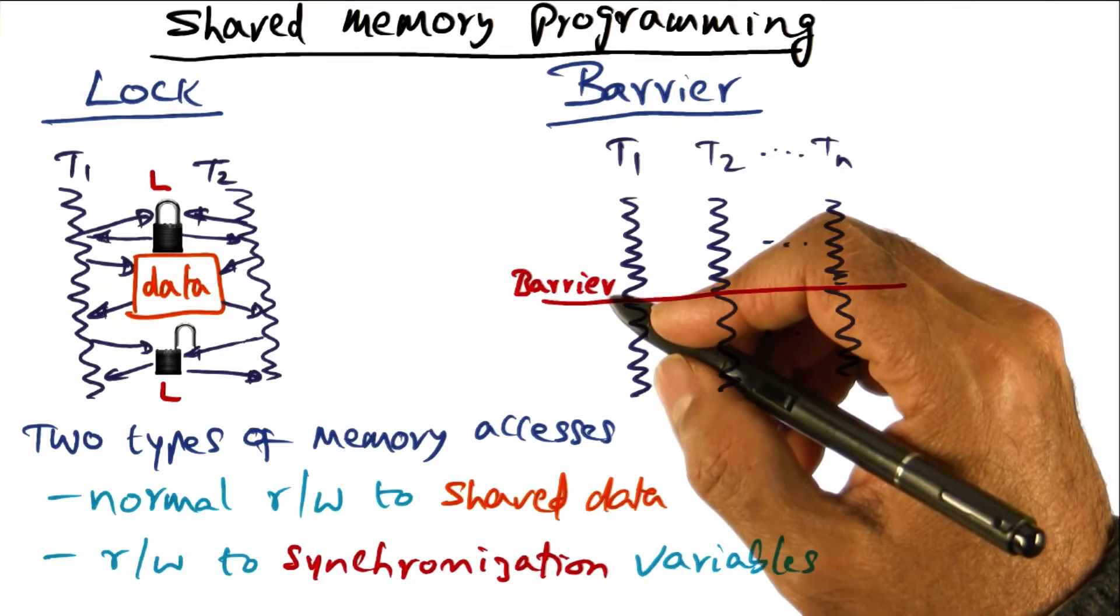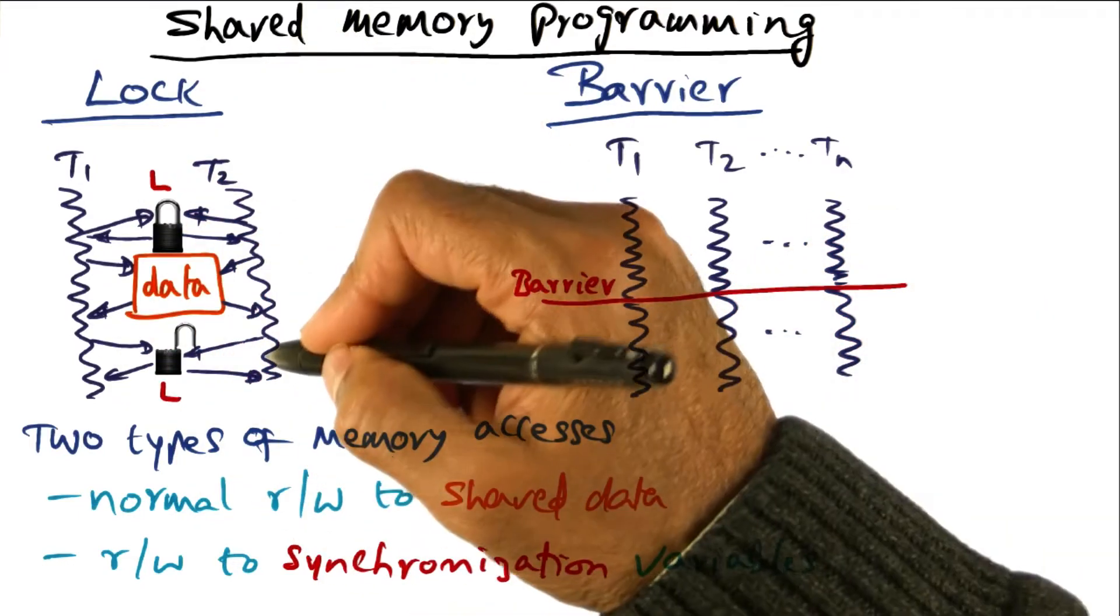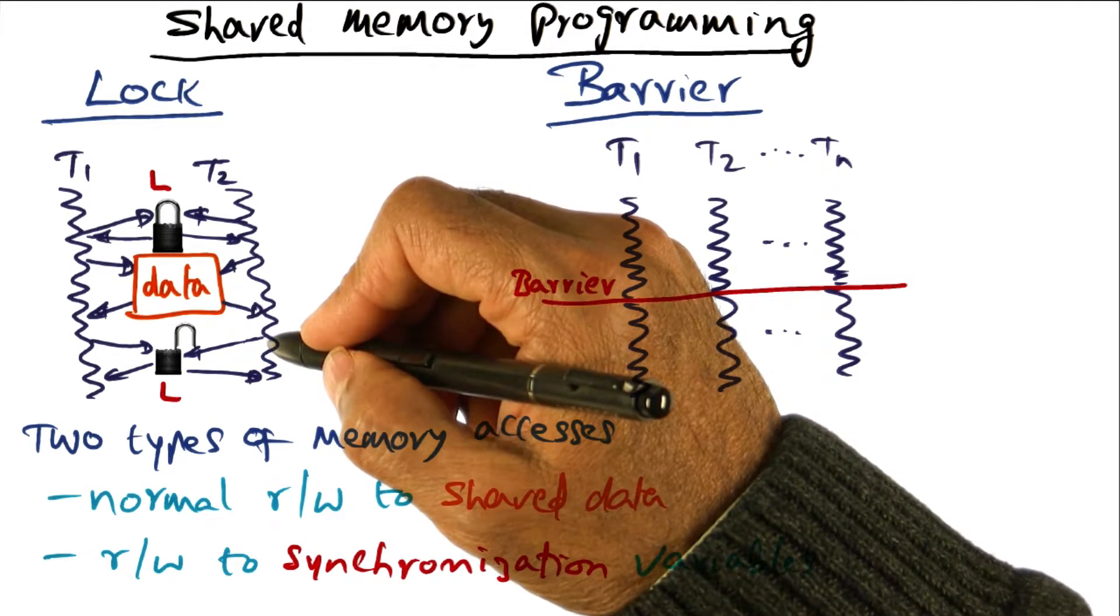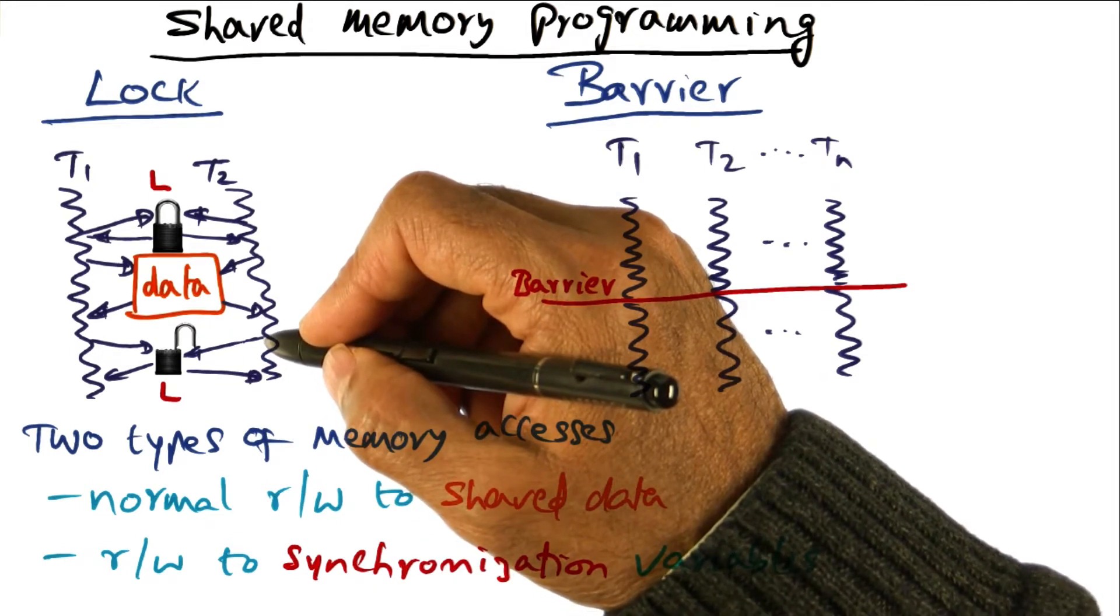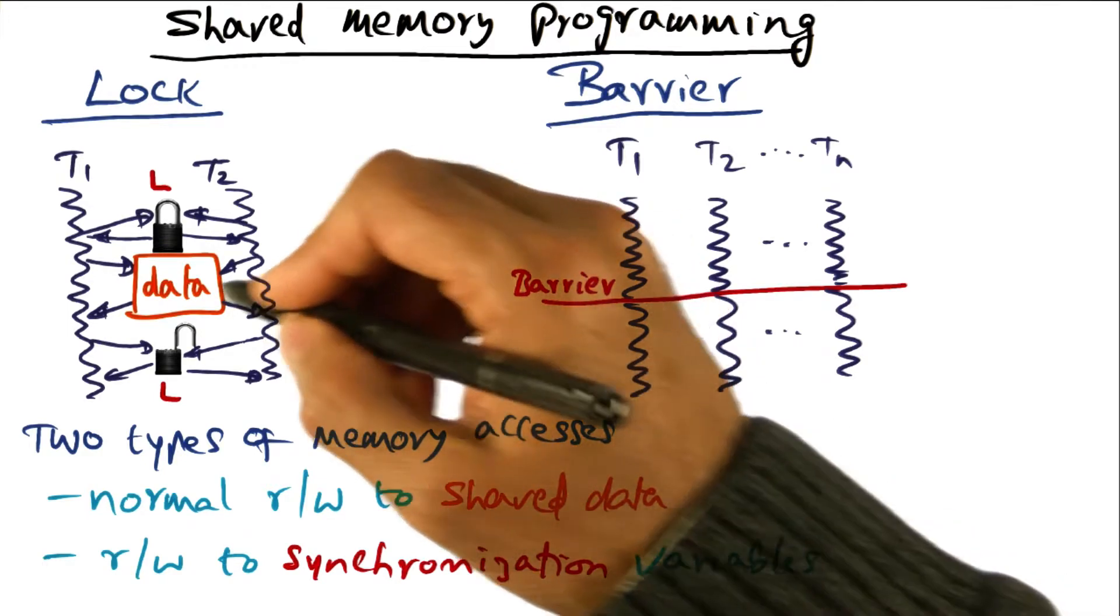I've already introduced you to shared memory synchronization. Lock is a primitive, and particularly the mutual exclusion lock is a primitive that is used ubiquitously in writing shared memory parallel programs